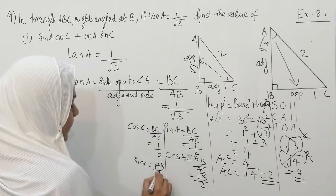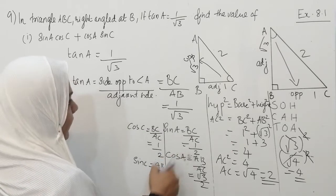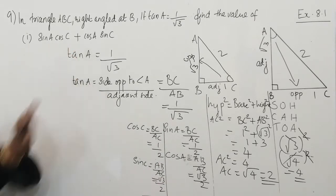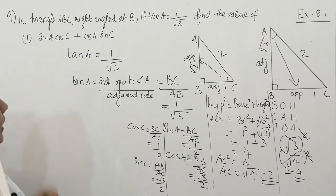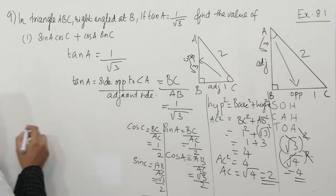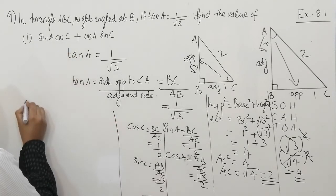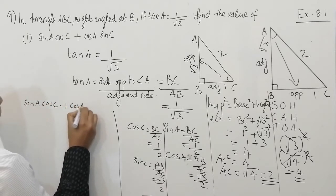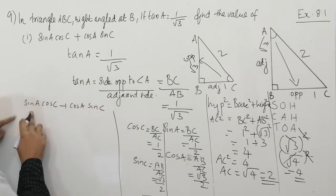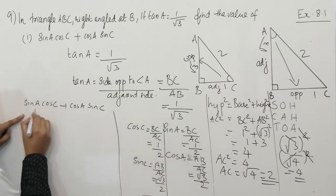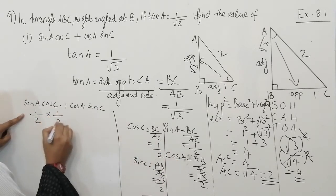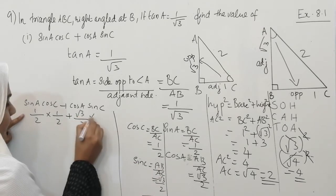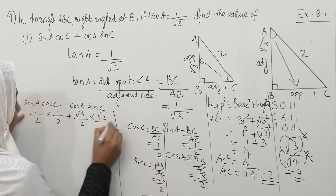Now with the second triangle where the reference angle is C, cos C equals 1 by 2 and sin C equals root 3 by 2. So we have found all four trigonometric ratios. Now we can start to solve the first question: sin A cos C plus cos A sin C. Sin A is 1 by 2, cos C is 1 by 2, cos A is root 3 by 2, and sin C is root 3 by 2.